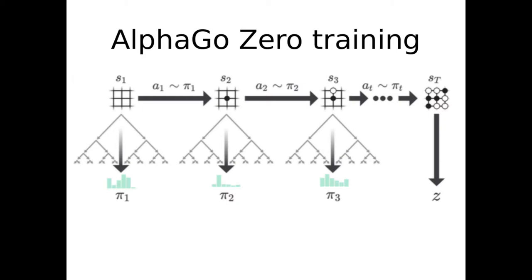Let's look at how AlphaGo Zero is trained. We start in state 1, where we already have a huge number of possible moves — each move branching out a tree. So we need to search all sub-trees for possible outcomes. As we can't do this for all trees, we use a technology called Monte Carlo Tree Search, and using the policy vector we decide which actions we actually take.